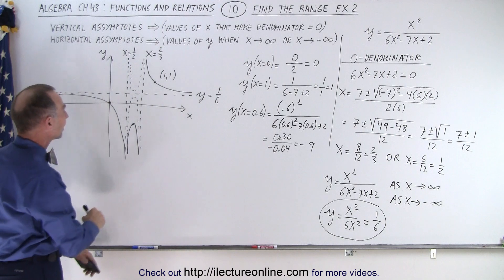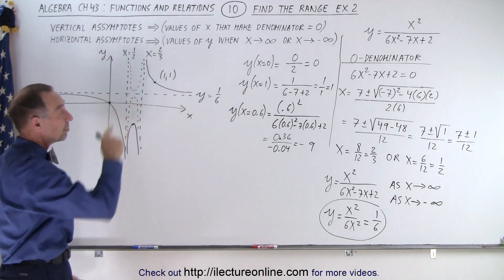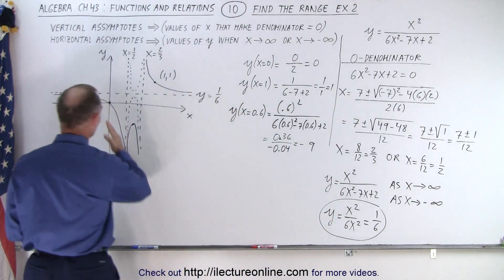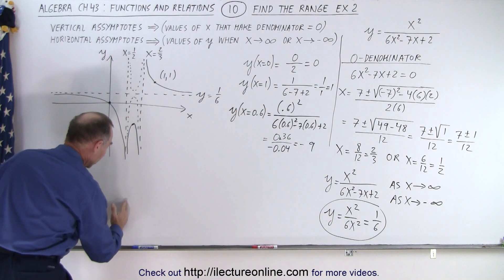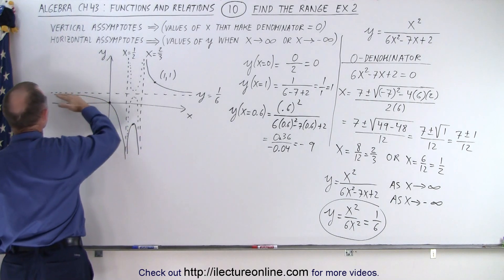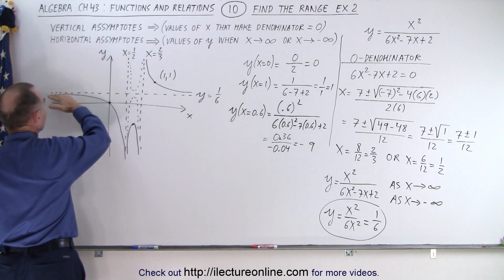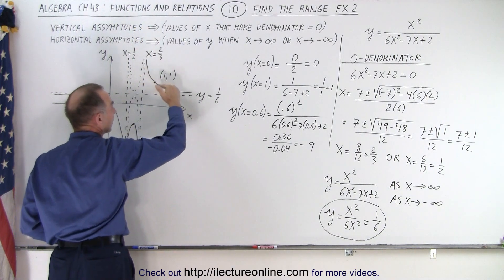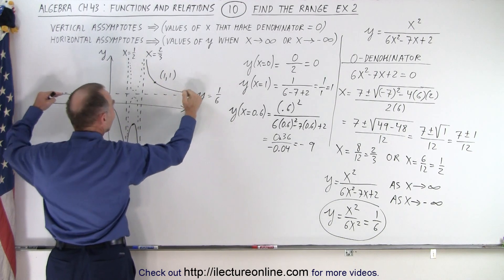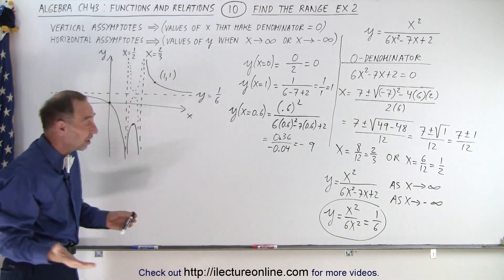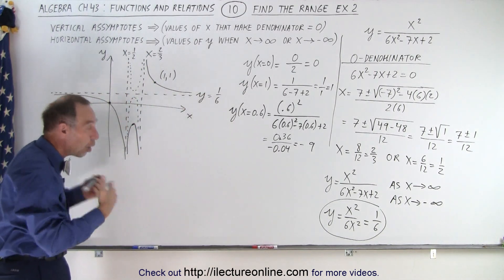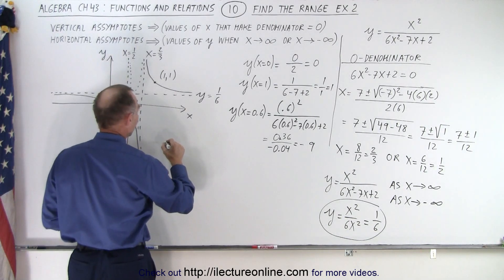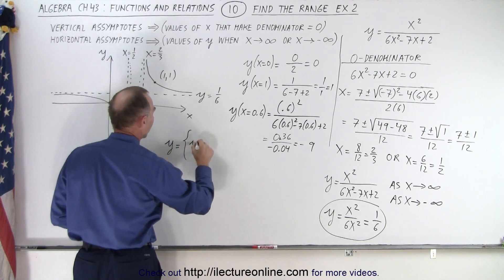That gives us a feel of what that graph looks like. Now we can determine what the range is. The range is all the possible values for y. And notice y can go to negative infinity here, all the way up to positive 1 sixth over here. Over here, y can go all the way to infinity this way and comes down here and goes down to 1 sixth. But it cannot equal 1 sixth. So essentially, the solution is that y can be all values except for 1 sixth.